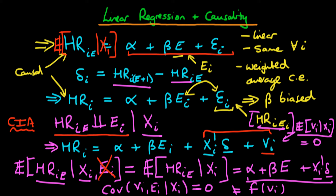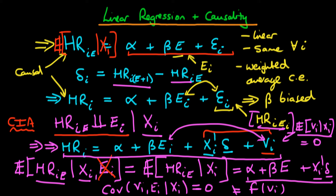Because there is no correlation between E_I and V_I, we can estimate the augmented regression equation and beta will be an unbiased estimator of the average causal effect. The reason beta represents the average causal effect is that it is the same beta appearing in the expression for expected potential heart rate — this equivalence is what allows us to estimate the average causal effect.